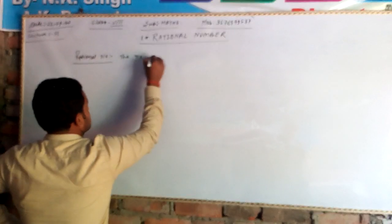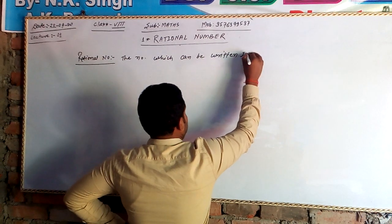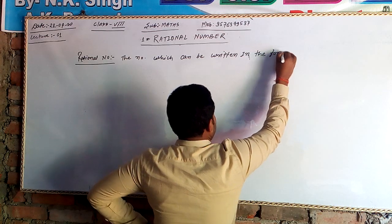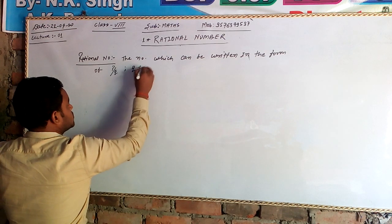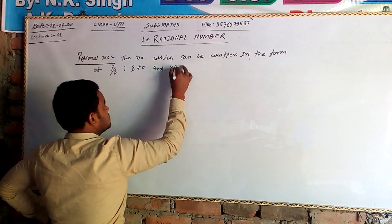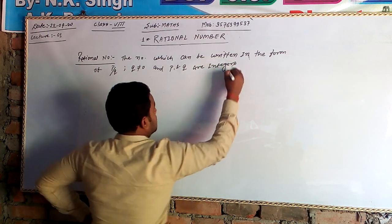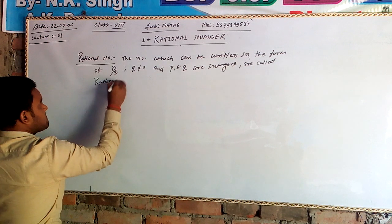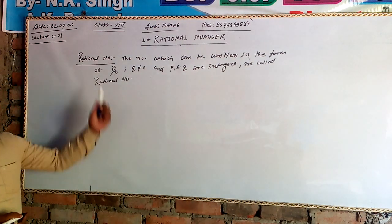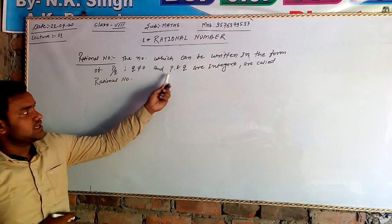The number which can be written in the form of P by Q, where Q is not equal to 0 and P and Q are integers, is called a rational number. So, any number which can be written in the form of P by Q, where the numerator and denominator are both integers.